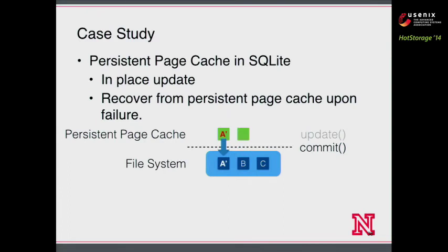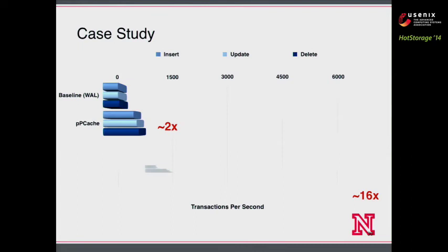When the application restarts, it uses the retrieve function to get the data back from QNVRAM and flushes the dirty pages to the table files so the database is in a consistent state. The performance comparison between persistent page cache and the baseline write-ahead log on a Samsung Galaxy S4 smartphone shows the persistent page cache outperforms write-ahead log by two times in all operations: insert, update, and delete.